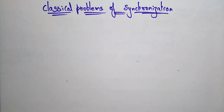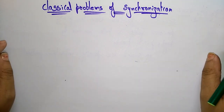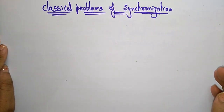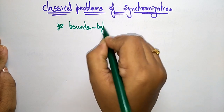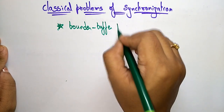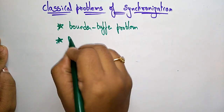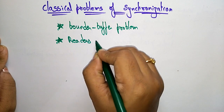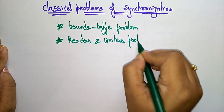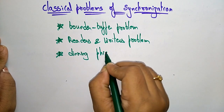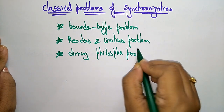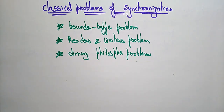Welcome back. Coming to the next topic: classical problems of synchronization. There are three main classical problems in synchronization. One is the bounded buffer problem, the next is the readers-writers problem, and the third is the dining philosophers problem. These are the main three problems that may occur while processes are in synchronization.